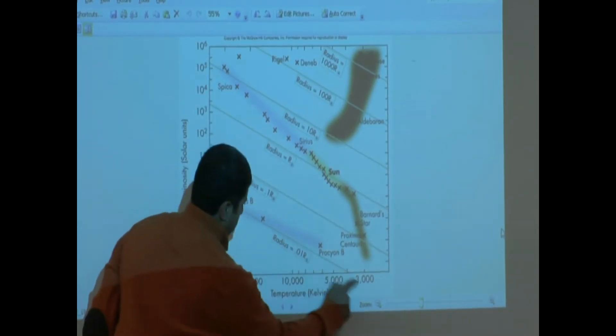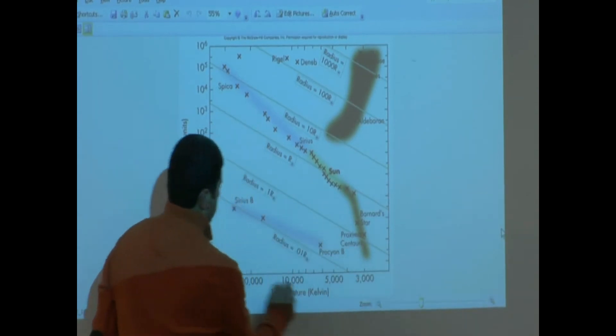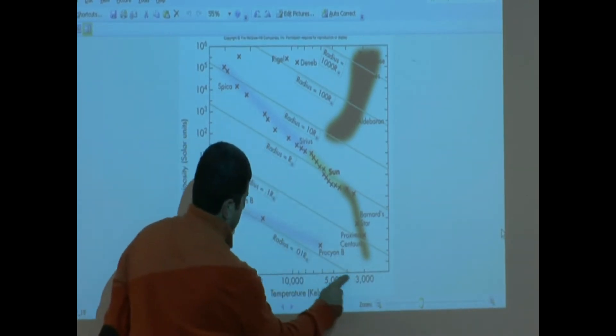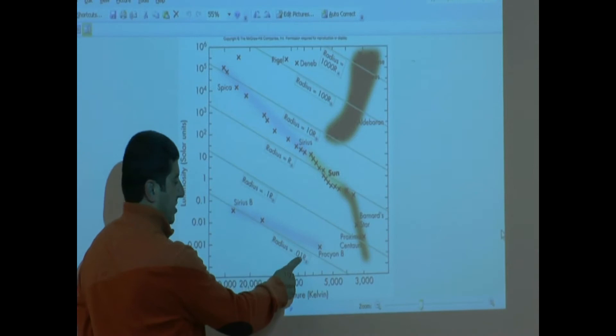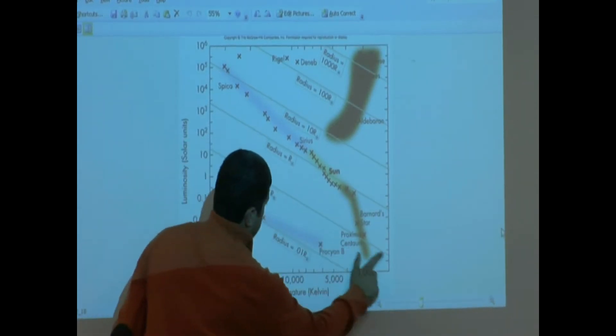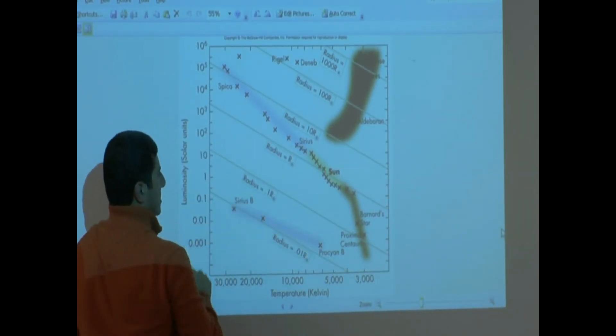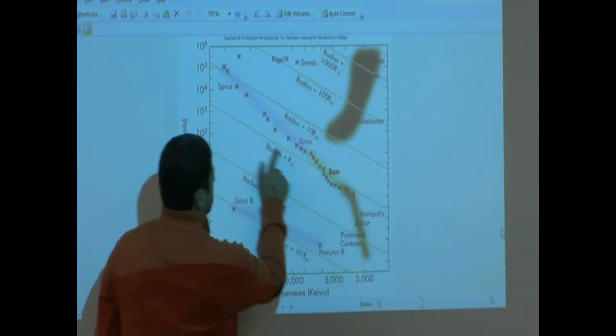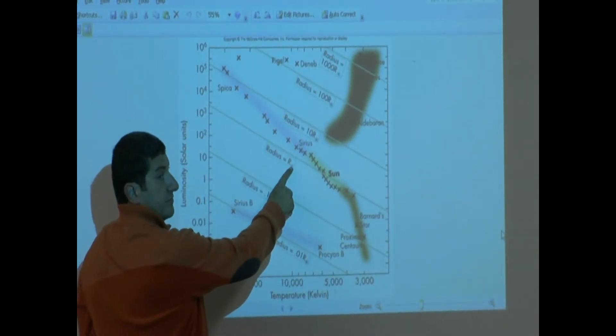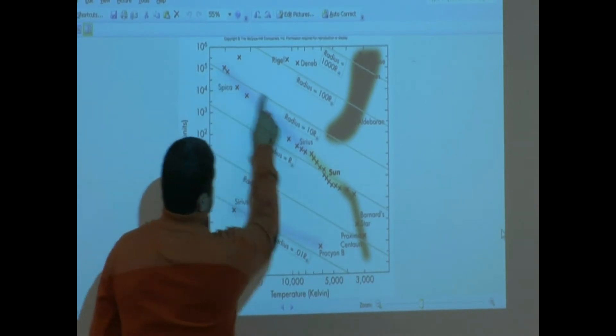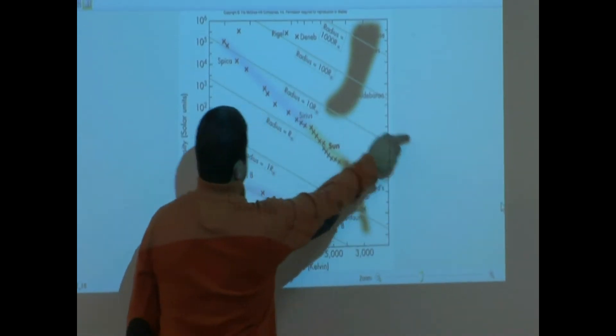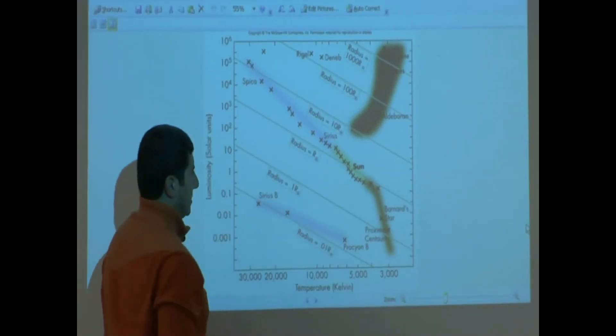And then the sizes are on the slanted lines. Any star that's on this line, one-hundredth the size of the sun. Any star that's on that line, one-tenth the size of the sun. Any star that's on that line, the same size as the sun. Ten times the size of the sun, a hundred times the size of the sun, a thousand times the size of the sun.